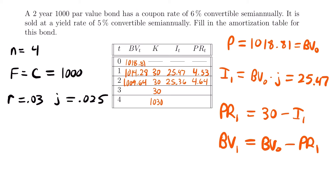For time three: the interest equals the yield rate times the book value at time two, giving 25.24. Subtracting that from the payment of 30 gives a principal of 4.76. The book value at time three equals 1009.64 minus 4.76, which is 1004.88.